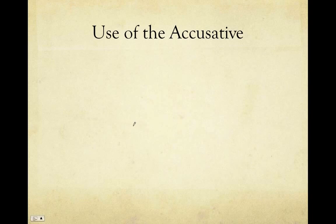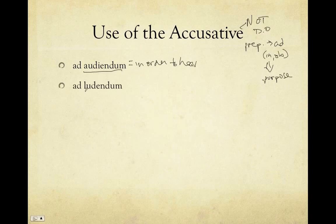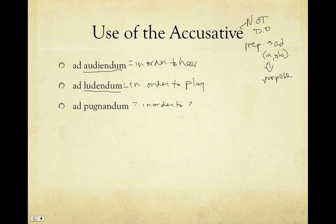The accusative is used in only one situation — and it is not the direct object. It's only going to be used with certain prepositions, most importantly ad, to show purpose. That's the only way we're going to use the accusative gerund: ad audiendum, 'in order to hear'; ad ludendum, 'in order to play'; ad pugnandum, 'in order to fight.'